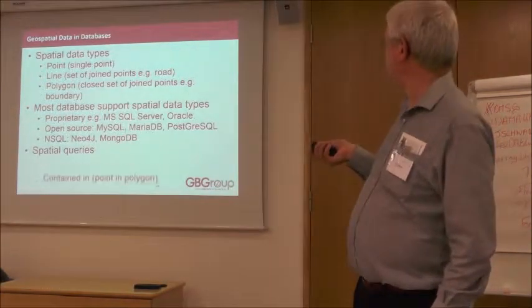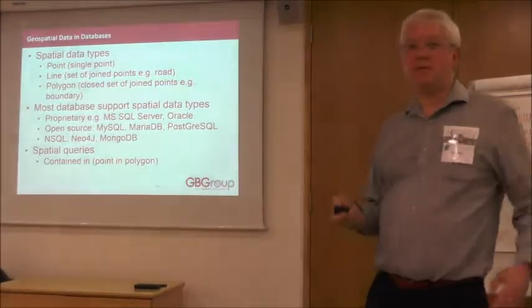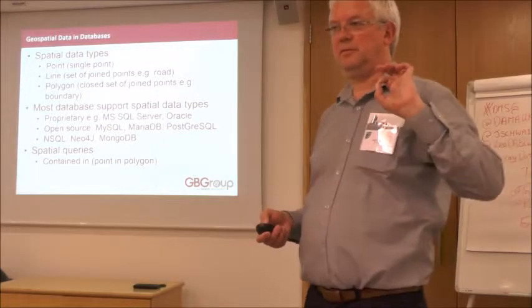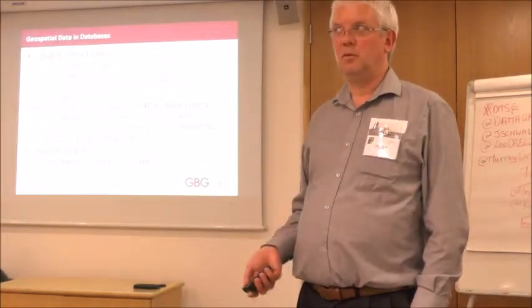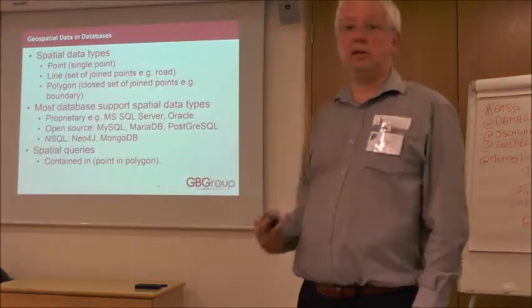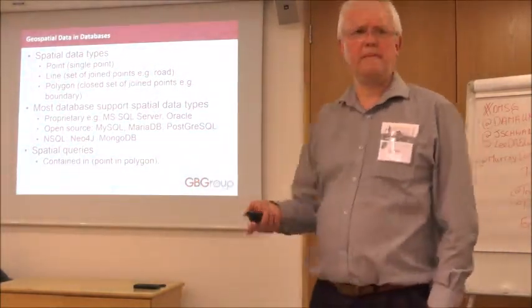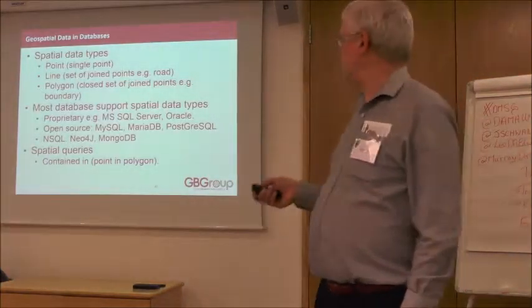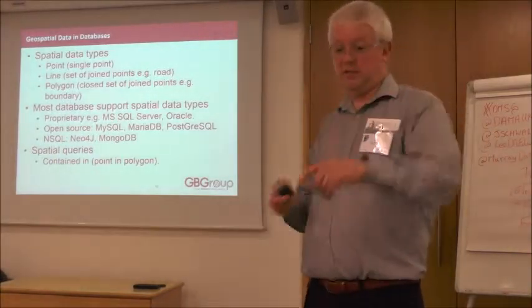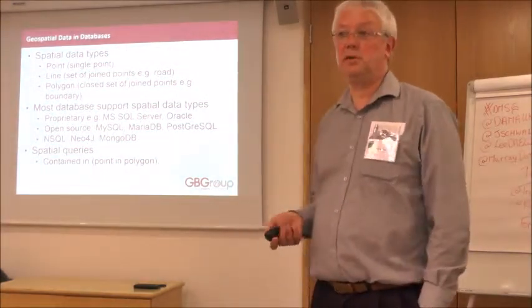Spatial queries — what kinds of things can you do with spatial data types? A very useful one is point in polygon. We've got a data point — maybe caught from a phone app — which hits a satellite and says 'I'm here, where am I?' The point in polygon query to the database returns which local authority area you're in. Facebook does this: when it says 'your location from wherever you are at the moment' — that is a simple example of a point in polygon query.